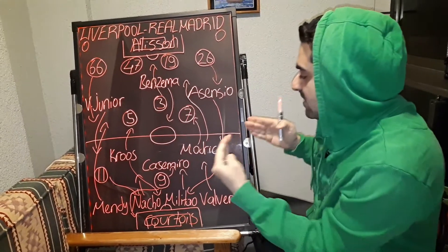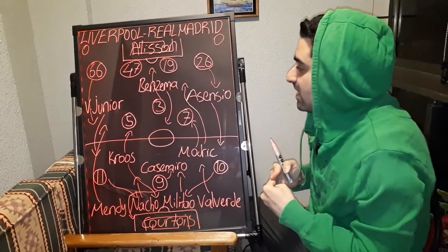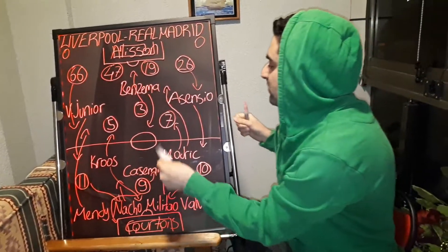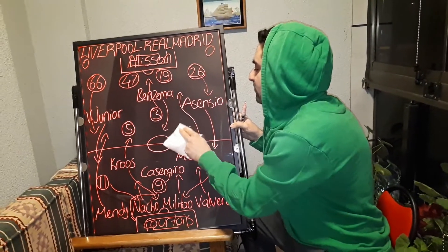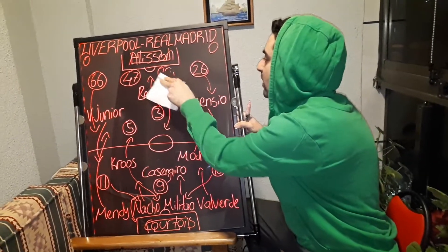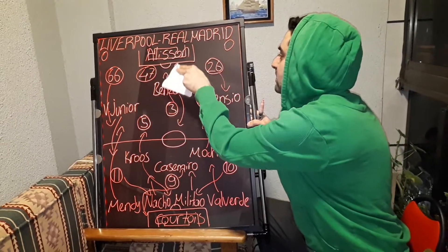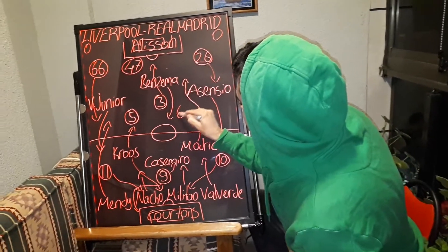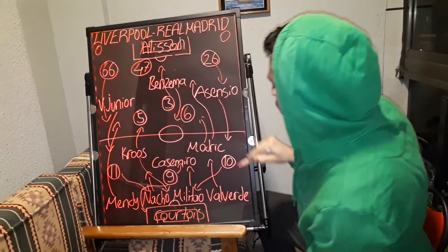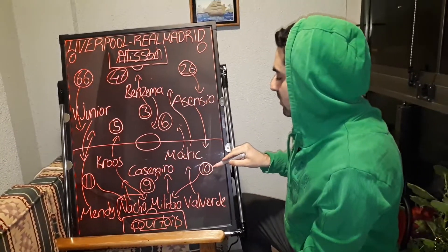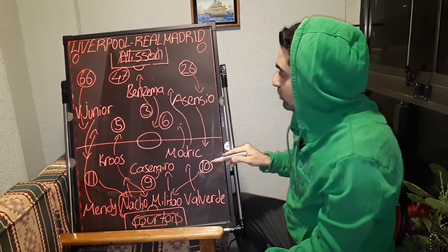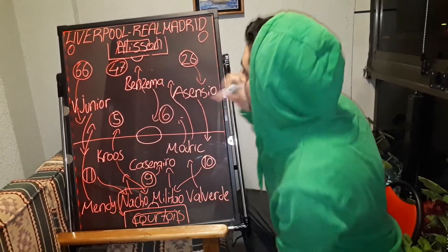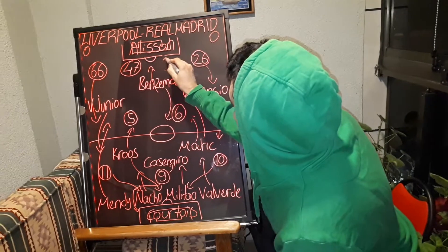In the second half there were substitutions for both teams. Liverpool's first substitutions: James Milner and Ozan Kabak came off. Thiago Alcantara started on the midfield, playing on the left side. Diego Jota played on the left forward position. Jurgen Klopp pulled Fabinho back to the centre of defence.